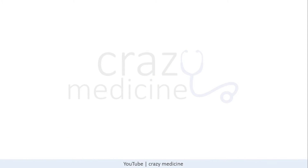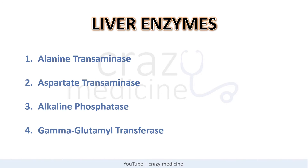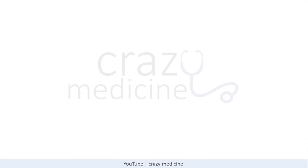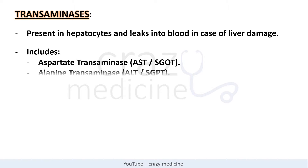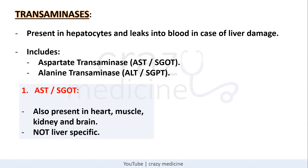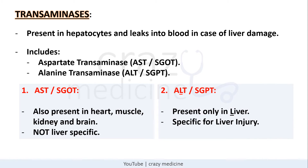Coming to liver enzymes — there are 4 liver enzymes as described earlier. First, transaminases: AST and ALT. They are present in hepatocytes and leak into blood in case of liver damage. AST is also called SGOT and ALT is also called SGPT. AST is present not only in the liver but also in the heart, muscles, kidney, and brain — so it is not specific to the liver. ALT or SGPT is present only in the liver, making it specific for liver injury. You can remember ALT for Liver. The normal value for both is around 10 to 40.